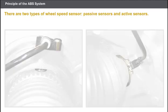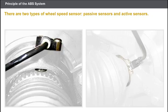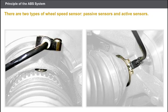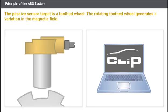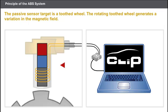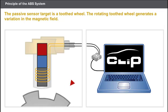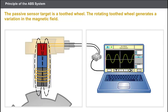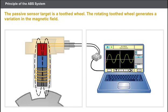There are two types of wheel speed sensor: passive sensors and active sensors. The passive sensor, also known as the inductive sensor, comprises a permanent magnet and a coil. The sensor is fitted opposite a target, which is a toothed wheel, also known as a pulse wheel. The rotating toothed wheel generates a variation in the magnetic field and induces a sinusoidal signal. The signal quality depends on the speed of rotation of the wheels.